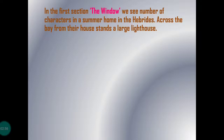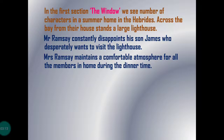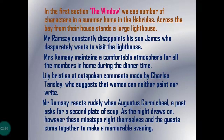In the first section, The Window, we see a number of characters in a summer home in the Hebrides. Across the bay from their house stands a large lighthouse. Mr. Ramsey constantly disappoints his son James, who desperately wants to visit the lighthouse. Mrs. Ramsey maintains a comfortable atmosphere for all the members at home during dinner time. Lily bristles at outspoken comments made by Charles Tansley, who suggests that women can neither paint nor write. Mr. Ramsey reacts rudely when Augustus Carmichael, a poet, asks for a second plate of soup. As the night draws on, however, these missteps right themselves and the guests come together to make a memorable evening.